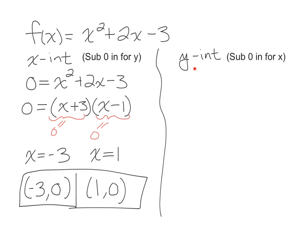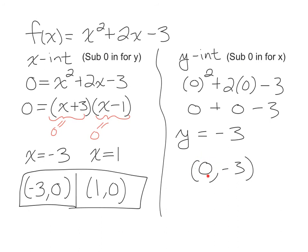The y-intercept, to find that, we will want to substitute 0 in for x. So we will substitute 0 in for x. And when we simplify this down, 0 plus 0 minus 3, you get that the y-intercept is negative 3. Again, this answer does not help us with making the graph. So we need to turn it into an ordered pair: 0 comma negative 3. And we have a 0 in the x-coordinate because we substituted 0 in for x.